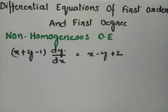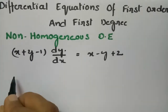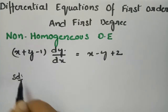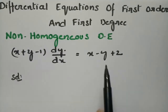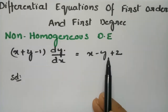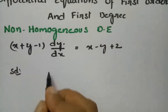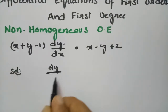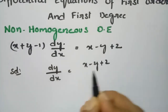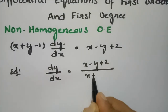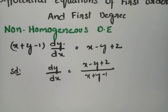Today's topic is non-homogeneous differential equations, which is from differential equations of first order and first degree. The question is: (x + y - 1) dy/dx = x - y + 2. We can write this as dy/dx = (x - y + 2) / (x + y - 1).